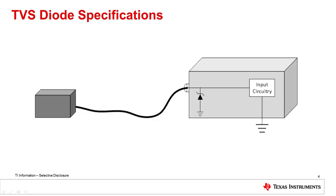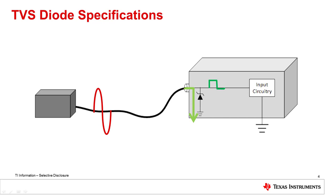The purpose of an input TVS diode is to shunt excess current to the ground during a surge. The TVS diode should ideally be invisible to the system during normal operation, and then immediately clamp the input voltage at the breakdown voltage during a fault. But unfortunately, all diodes have non-ideal limitations that must be accounted for.